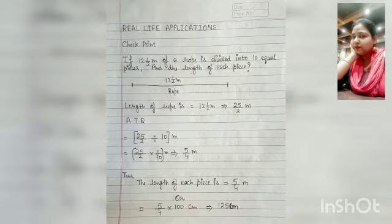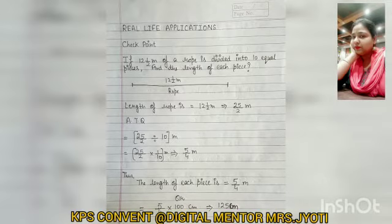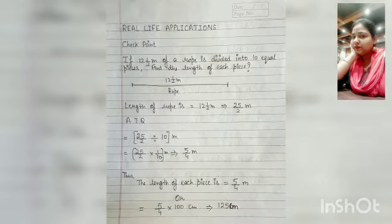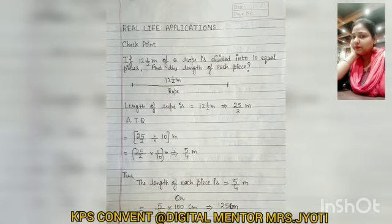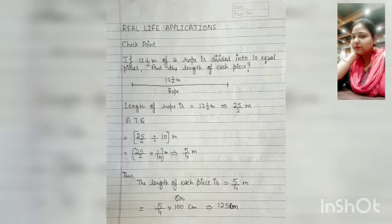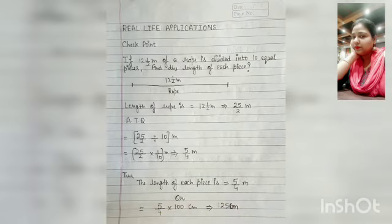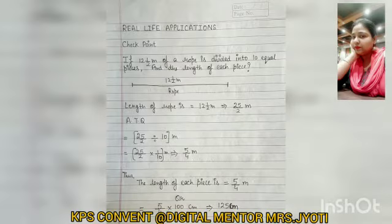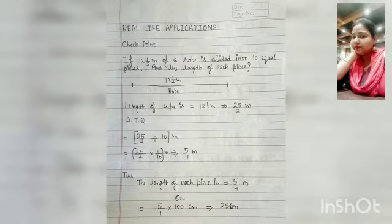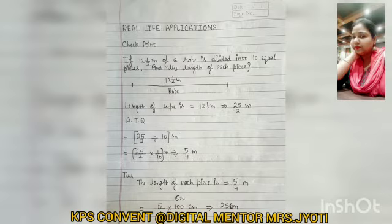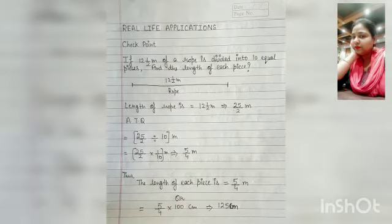First, we write the length of the rope as 12 and 1 by 2. As you know, this is a mixed fraction. Now we convert this mixed fraction into a simple fraction. The answer is 25 by 2 meters.